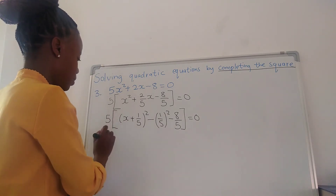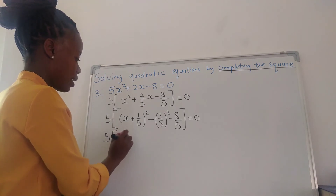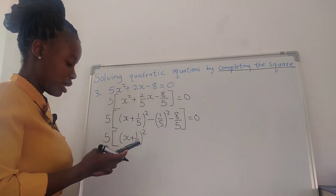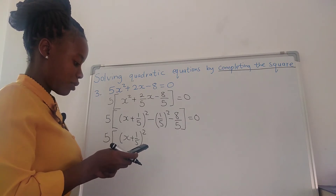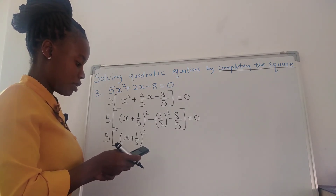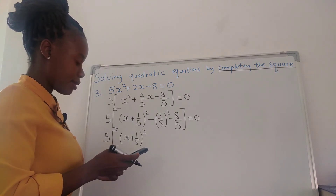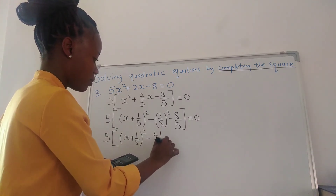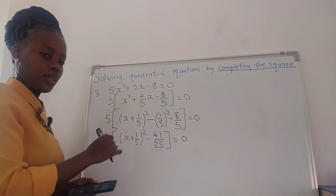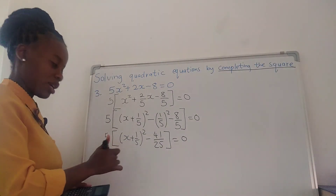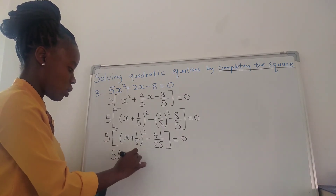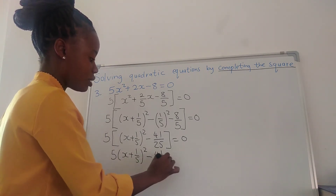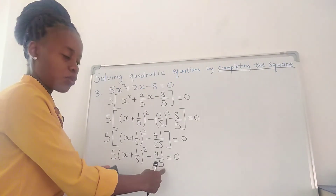So we have 5 times x... You take half of 2 over 5 divided by 2, which is 1 over 5. Then you square. You always subtract this squared, minus 8 over 5, equals to 0. Now we're going to have 5 times x plus 1 over 5 squared. Negative 1 over 5 squared minus 8 over 5 gives us negative 1 over 25 minus 8 over 5. We have completed the square.